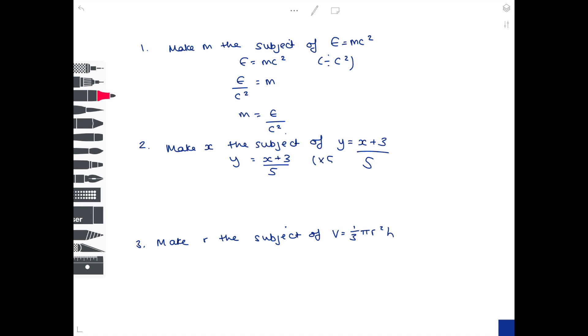So we need to multiply both sides by 5 to get 5y equals x plus 3. And then obviously the x by itself we need to take away 3 from both sides. And then just rewrite to make sure that x is on the left-hand side. And that is your final answer.